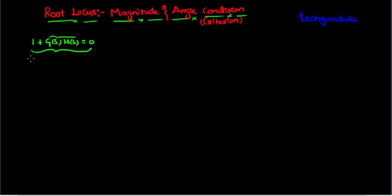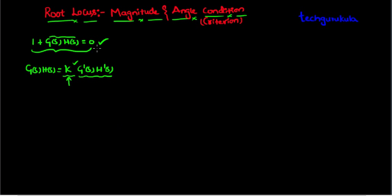G(s)·H(s) can be rewritten as a factor k times G'(s)·H'(s), where G'(s) and H'(s) don't have any factor involving k, so k is independent. If we change values of k and see how the roots of this equation change, and plot these values on an s-plane, we get the locus of roots changing with respect to k. This locus on the s-plane is known as the root locus.